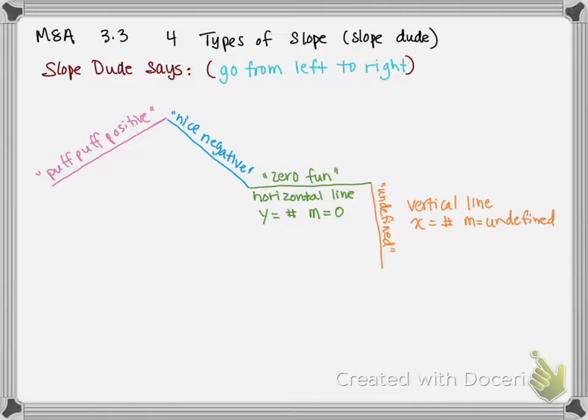I am going to draw you a little face that I've seen before, which is kind of cute, kind of slope dude in a face. We've got some eyebrows. That eyebrow is a positive slope. This eyebrow is a negative slope. We have a nose, that's undefined because it's a vertical line. And then we have zero fun. We have his face. He's not very happy, it's a horizontal line. It has a slope of zero.